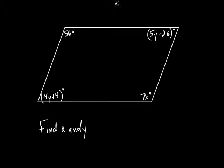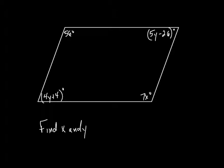I want to find out what x should be and what y should be in order to make that into a parallelogram. If the opposite angles are equal to each other, then I have made this four-sided figure into a parallelogram — or at least shown that it was a parallelogram. So if this angle equals this angle and this angle equals this angle, then the thing must be a parallelogram. We're trying to find what value of x makes these equal and what value of y makes these two equal.